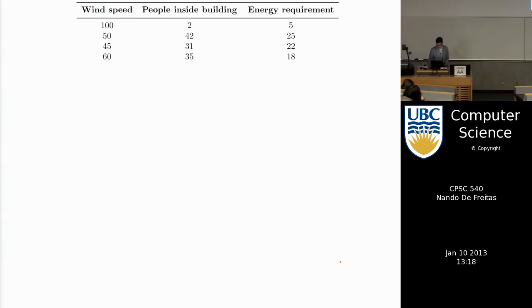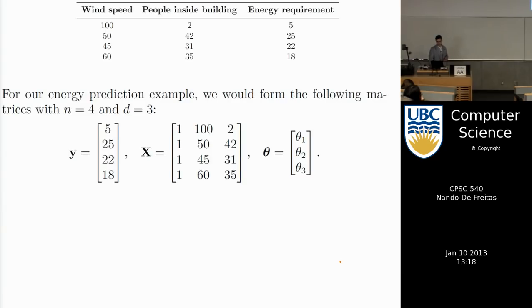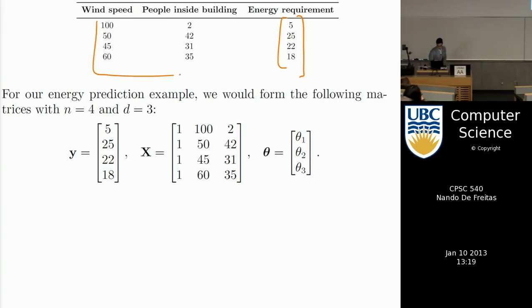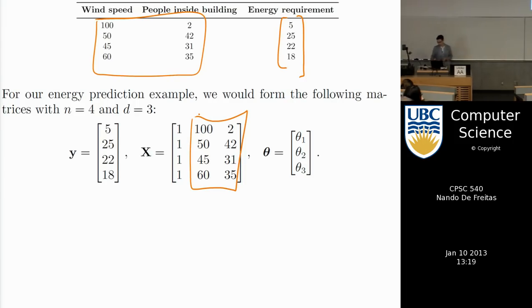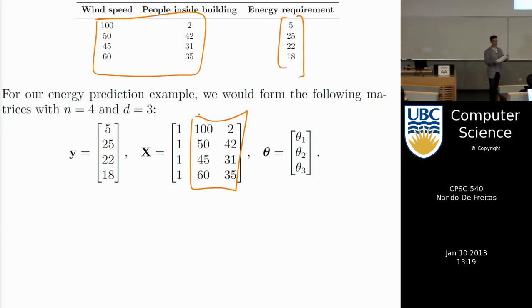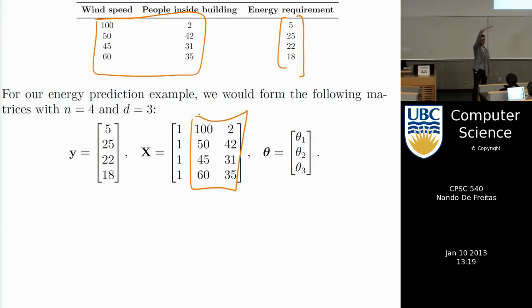Here's the energy prediction example with two inputs: wind speed and number of people. The output y is this column, and the matrix X is formed by taking the two inputs and prepending a column of ones. I need the ones column because without an intercept I can't shift my plane up and down — the plane would be forced through the origin. In this case I have three parameters: θ_1 controls the vertical offset, θ_2 the slope in one direction, and θ_3 the slope in the other.